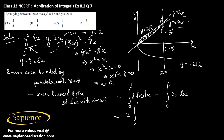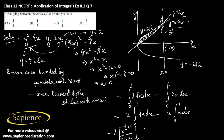Taking the constants outside, this becomes 2 times the integral from 0 to 1 of x^(1/2) dx, minus 2 times the integral from 0 to 1 of x dx. Evaluating: the first integral gives x^(3/2) divided by (3/2), evaluated from 0 to 1, which is (2/3) × 1. The second integral gives x²/2 evaluated from 0 to 1, which is 1/2.